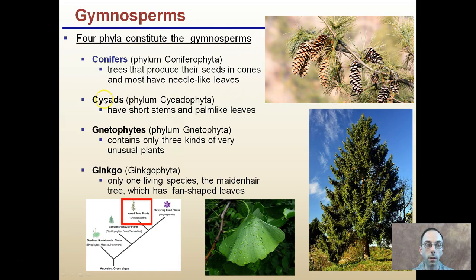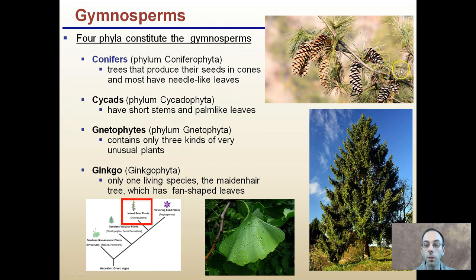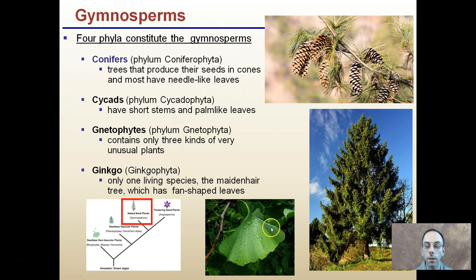Starting with gymnosperms — there are different phyla that consist of them, but I'm going to focus mainly on two. Conifers are probably what you're most familiar with: trees that produce their seeds in cones and most have needle-like leaves. You might also be familiar with ginkgos — only one living species remains, and what makes them distinctive is their fan-shaped leaves.